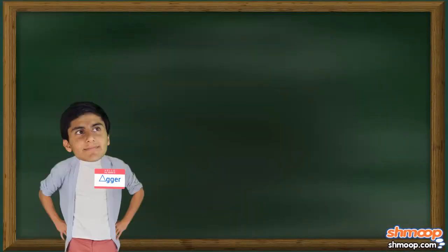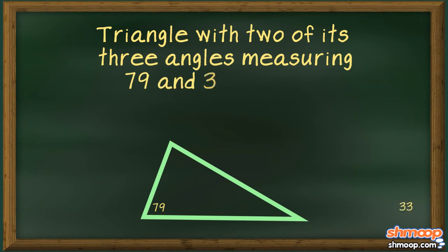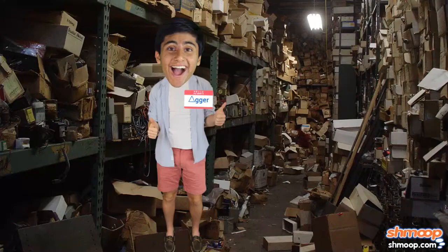The third oldest brother, Trigger, was given a triangle with two of its three angles, measuring 79 and 33 degrees. He was just about to grab his protractor to measure the angle of the third side,